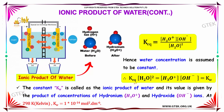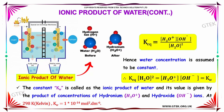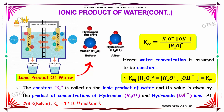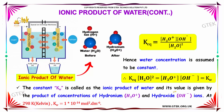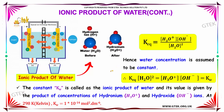Hence, water concentration is assumed to be constant. That is, K equilibrium will be equal to K of water. K of water is nothing but the ionic product of water, and its value is given by the product of the concentration of hydronium and hydroxide ions. At 298 Kelvin, that is at room temperature, the equilibrium constant will be equal to 10 to the power minus 14 mol² dm⁻⁶.